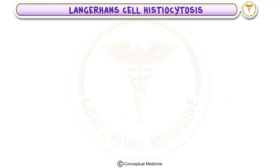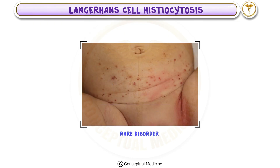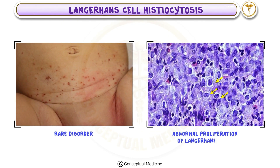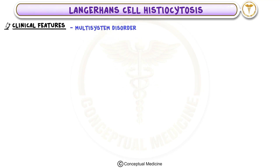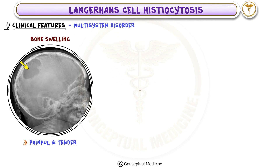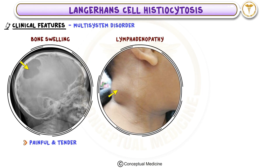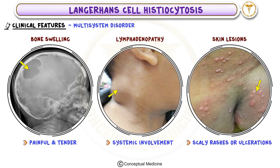Langerhans Cell Histiocytosis (LCH) is a rare disorder caused by the abnormal proliferation of Langerhans cells. It is a multi-system disorder, meaning it can affect different parts of the body. Patients may present with bone swelling — often painful and tender — lymphadenopathy (swollen lymph nodes) seen in systemic involvement, and skin lesions appearing as scaly rashes or ulcerations, commonly seen in infants.